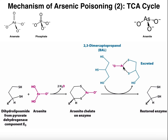Additionally, notice this arsenic still has an oxygen with a negative charge, and there is also an OH group on the molecule, which is polar. So you have a polar charged molecule which can easily be excreted. That's how 2,3-dimercaptopropanol acts as an antidote for arsenite poisoning — by chelating the arsenic that was bound to enzyme E3 of either pyruvate dehydrogenase or alpha-ketoglutarate dehydrogenase.